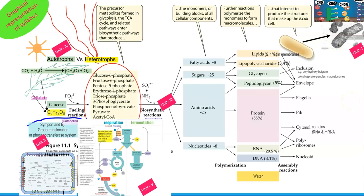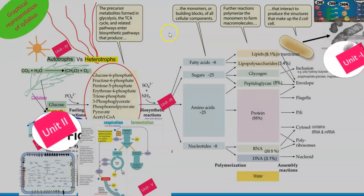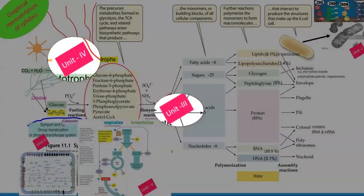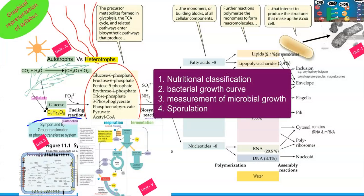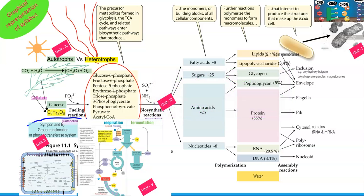This slide is a graphical representation of the whole syllabus, showing Unit 1 through Unit 5. In Unit 1, you will look at what nutrients are required for microorganisms, how microbes are classified nutritionally, how microbes grow, how growth can be measured, and the different forms in which they can multiply. For example, sporulation is an important process in gram-positive organisms. These topics are all explained in Unit 1.